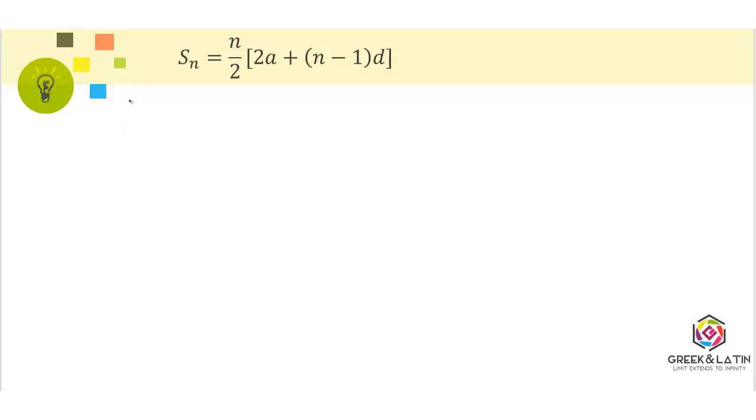If we take the same arithmetic progression from the last slide, let's write it down: 3, 7, 11, 15, 19, 23, 27, 31. Let's suppose that's it. How many numbers are there? There are 8 numbers.